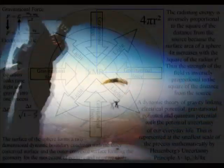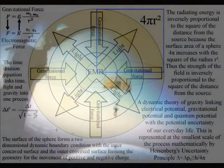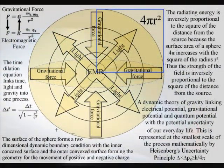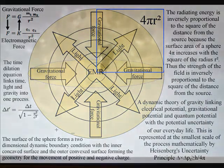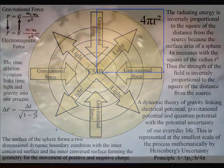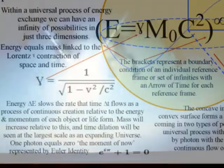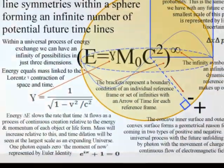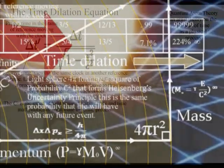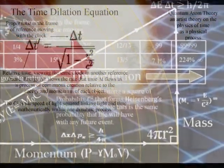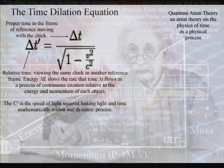Every action creates a reaction, and the inward force of gravity is the reaction of the outward momentum of photon energy as a process of continuous energy exchange or continuous creation. Photon energy slows the rate that time flows as a process of continuous creation relative to the energy and momentum of each object or life form. Mass will increase relative to this, with the time dilation of Einstein's relativity being part of this universal process.